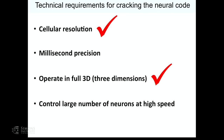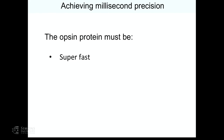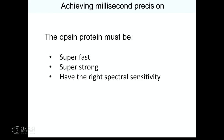This solves the optical problem — gives you cellular resolution in 3D. But we really wanted millisecond precision, which turned out to be an even bigger challenge. You're limited by the opsin protein. Channelrhodopsin for a number of reasons is not good. We needed an opsin that was extremely fast on and off, very strong — you can only put so much light in the brain before it heats up — and with the right spectral sensitivity so you don't have crosstalk with GCaMP imaging.